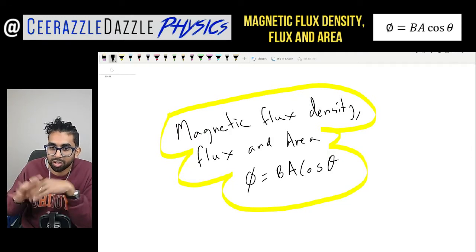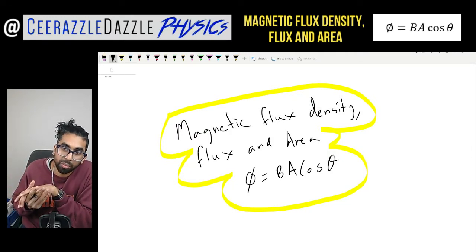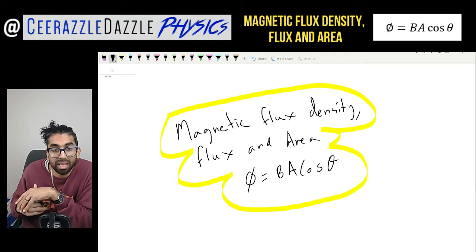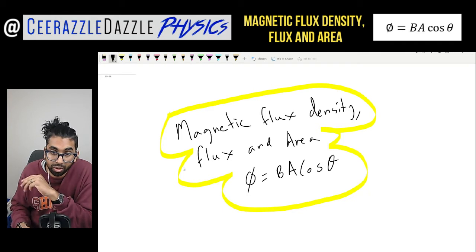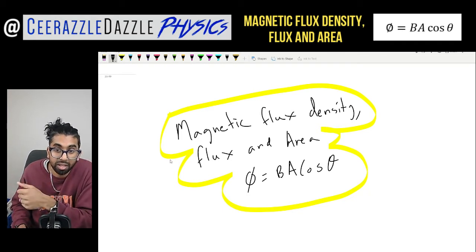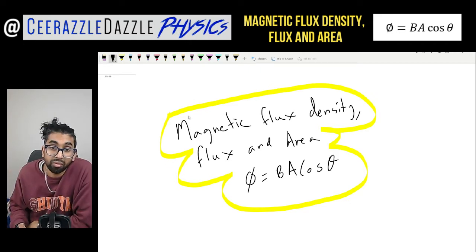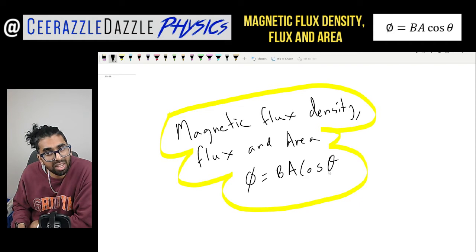Hey everyone, welcome to another session of Surrazzle Dazzle Physics. In today's session we're talking about magnetic flux density, flux and area, and getting the formula phi is equal to BA cos theta. This is the follow-up video from my previous one in which I talked about magnetic flux, magnetic flux linkage and magnetic flux density, so make sure you've watched that video before watching this one.